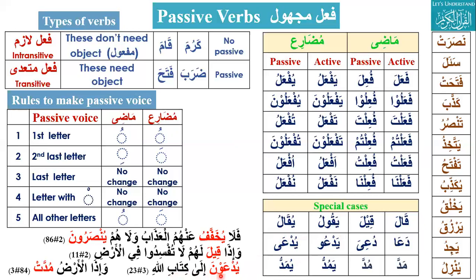Fourth example: 'Wa izal ardu muddat.' Madda means 'he stretched' — passive muddat means 'she was stretched.' Because of izaa this is translated in mudari' tense: 'And when the earth is stretched' or 'when the earth will be stretched.' These are the Quranic examples of passive voice.